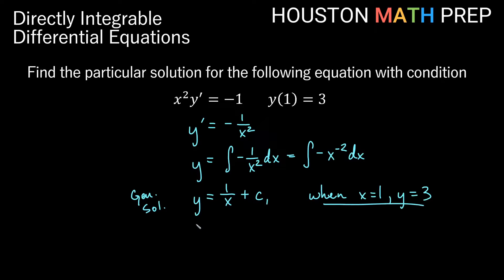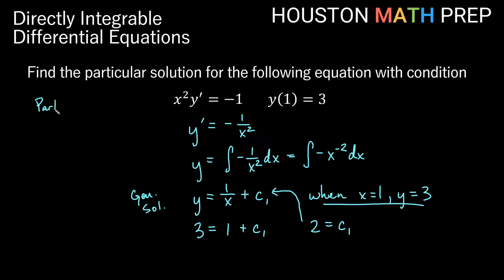Plugging in y equals 3 and x equals 1, we get 3 equals 1 over 1 plus c1, which is 3 equals 1 plus c1. Subtracting 1 from both sides gives c1 equals 2. Substituting that back into the general solution, our particular solution is y equals 1 over x plus 2.